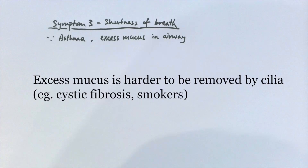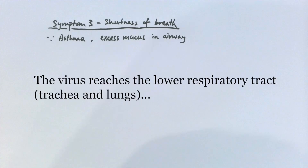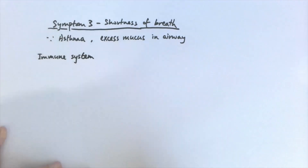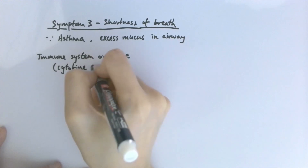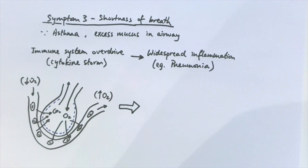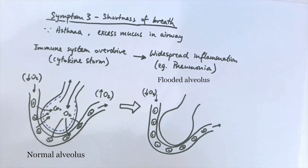For people who produce excess mucus, it's harder for the cilia to remove it. This is usually the case for people with a flu infection or conditions such as cystic fibrosis, or for smokers. This is the same for COVID if the virus reaches the lower respiratory tract — the trachea and the lungs — indicating the infection has passed the initial stage where it just stays in the upper respiratory tract such as the nose and throat. Things get really serious if the virus gets to the lower respiratory tract. Having dealt with the virus for a long time, your immune system can go into overdrive and cause widespread inflammation in many essential organs, including the lungs.